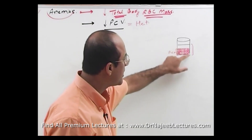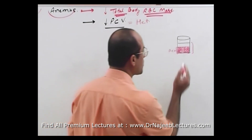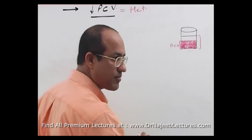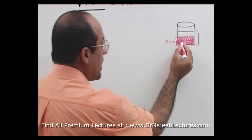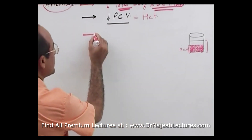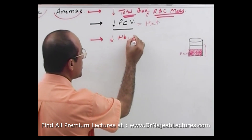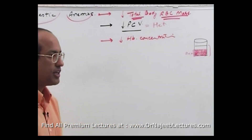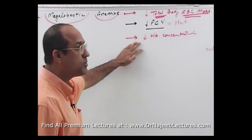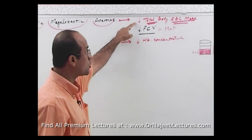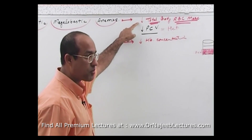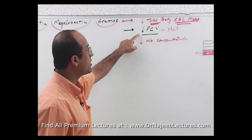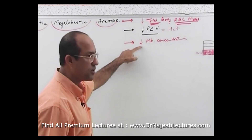Within the packed cell volume, all the red blood cells are packed with hemoglobin. Another way to define anemia is reduced hemoglobin concentration. Ideally we talk about reduced total body red cell mass, but because it cannot be measured easily in laboratories, we usually depend on packed cell volume, hematocrit, or hemoglobin concentration.